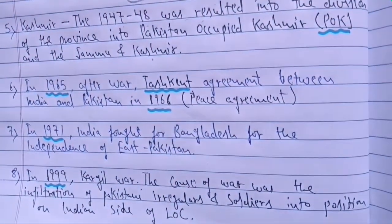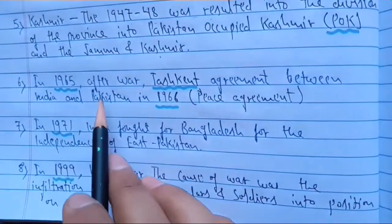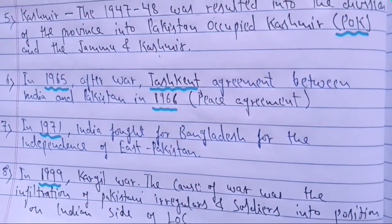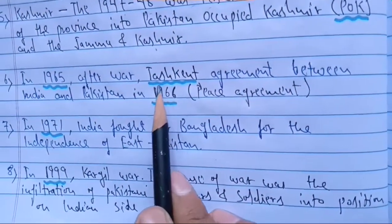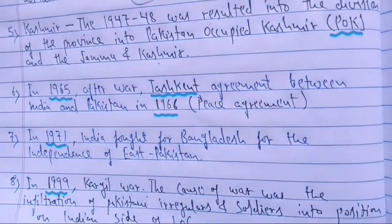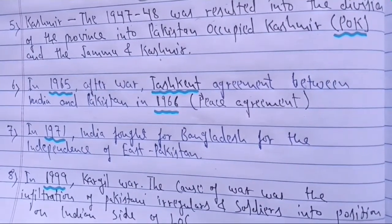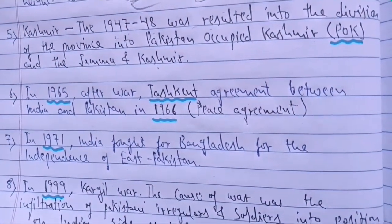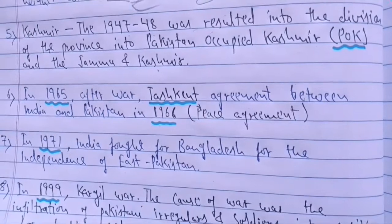The next conflict between India and Pakistan was the war of 1965, where Pakistan again tried to cross the border — the Line of Control. After this war, the Tashkent Agreement was signed between India and Pakistan in 1966. It was a peace agreement, with the Soviet Union acting as mediator, to bring peace to both countries. Still, the problem was not fully solved, but the Tashkent Agreement of 1966 was a significant step.